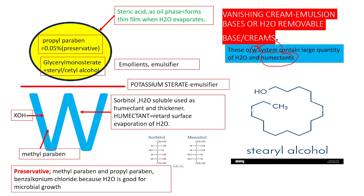The oil phase here is stearic acid. Stearic acid forms the oil phase and will form a thin film on the skin when the water evaporates. Next, propylparaben is a lipophilic preservative that can be dissolved in the oil phase, used at 0.05%.